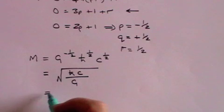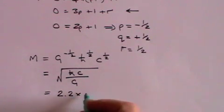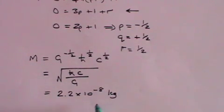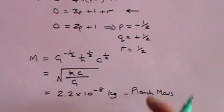And if you substitute in the values of H bar C and G which we wrote down earlier you will get 2.2 times 10 to the minus 8 kilograms. And that is known as the Planck mass.